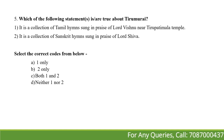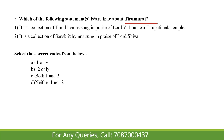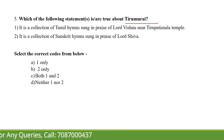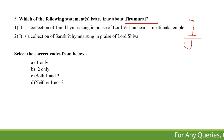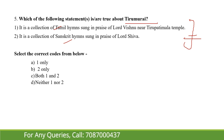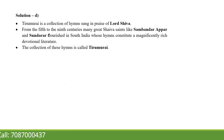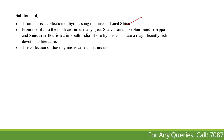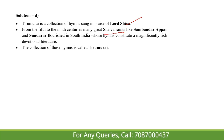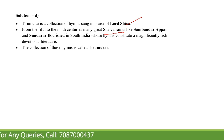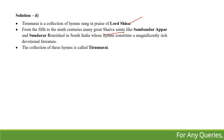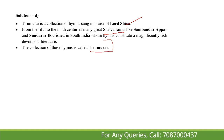Which of the following statements are true about Tiru Murai? First, it is a collection of Tamil hymns sung in praise of Lord Vishnu near the Tiru Patimala temple. Second, it is a collection of Sanskrit hymns sung in praise of Lord Vishnu. Both statements are contradictory and both are wrong — one mentions Lord Vishnu and the other also mentions Vishnu, but Tiru Murai is actually a collection of hymns in Tamil sung in praise of Lord Shiva. These hymns flourished from the 5th to 9th century with Shiva saints — Sambandar, Appar, and Sundarar — and represent a rich and significant devotional literature. The collection of these hymns is called Tiru Murai.